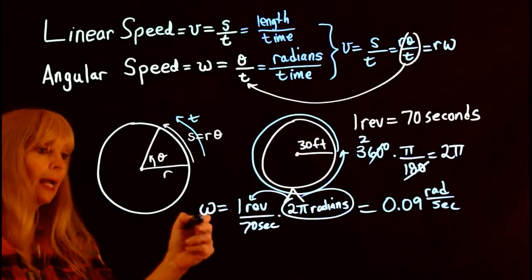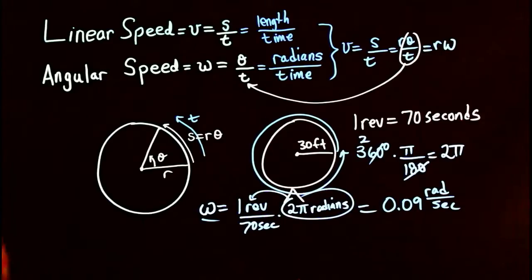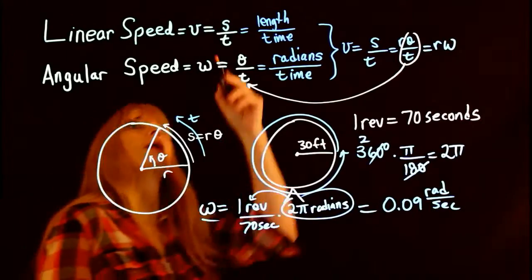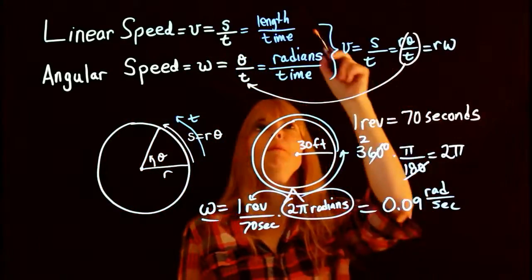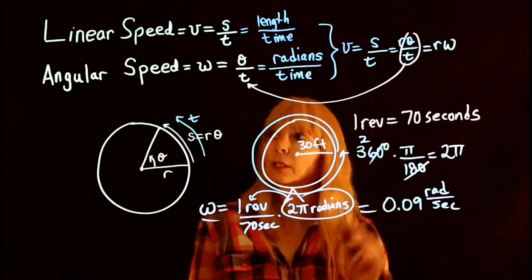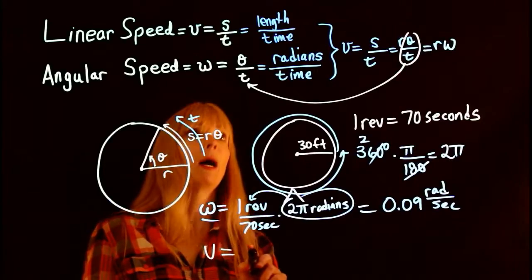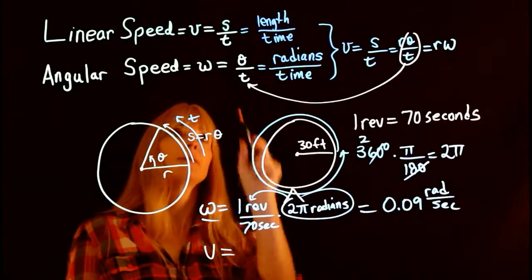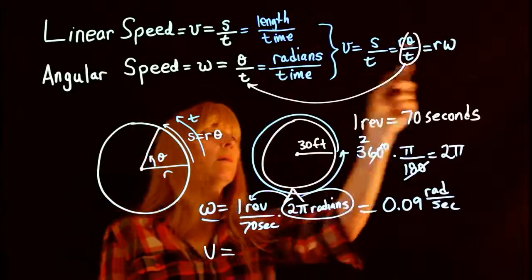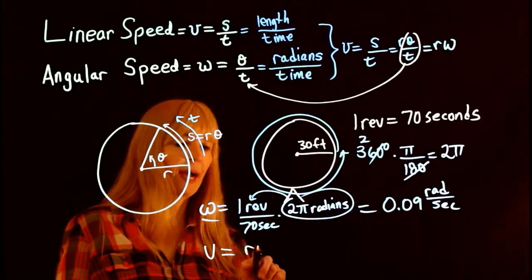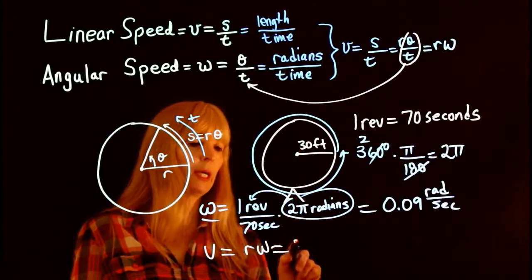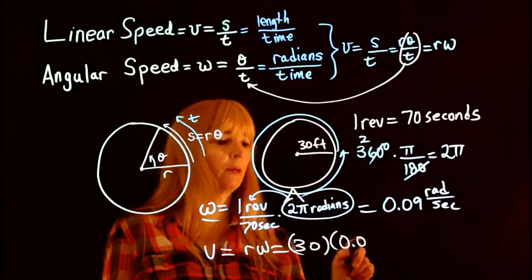Well, now that I have this, it's certainly a lot easier to find my linear speed, because my linear speed is my s over t. But this formula is a lot faster because I already know the radius is 30 and I just found that piece.